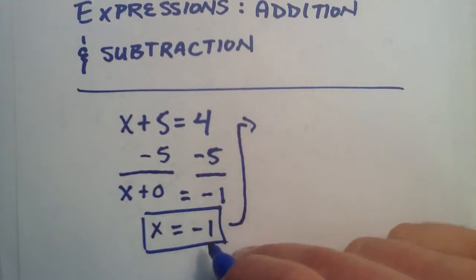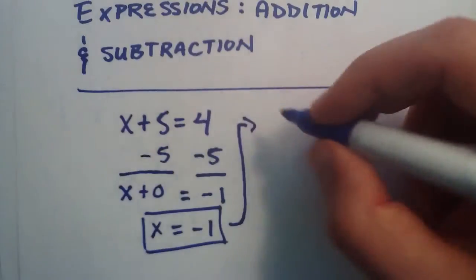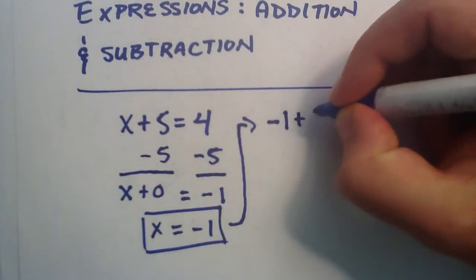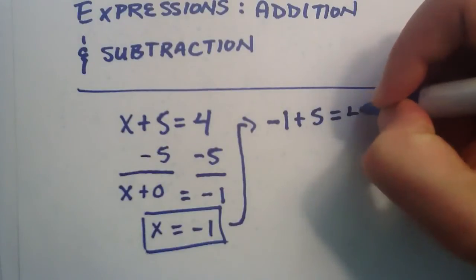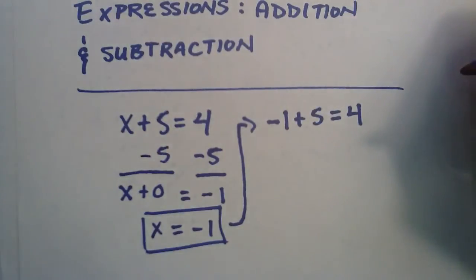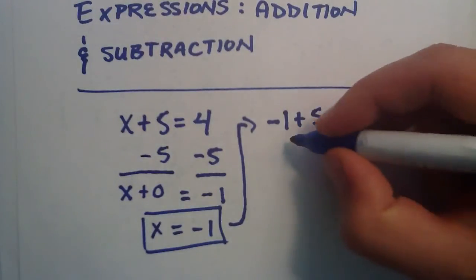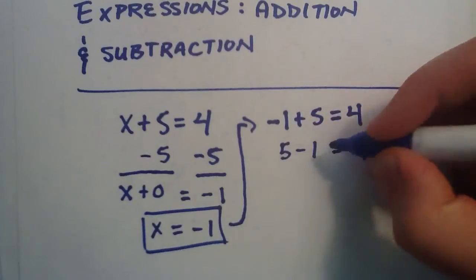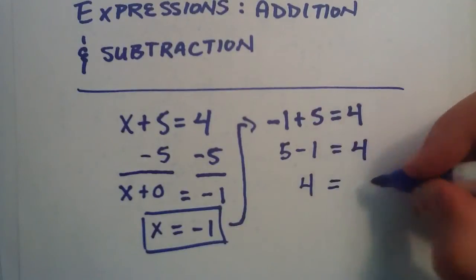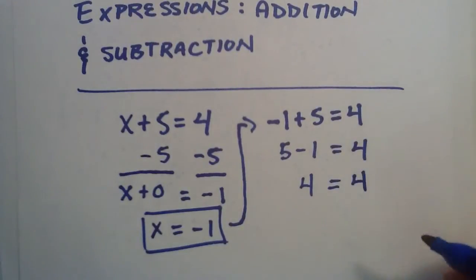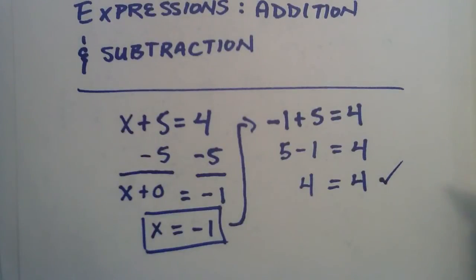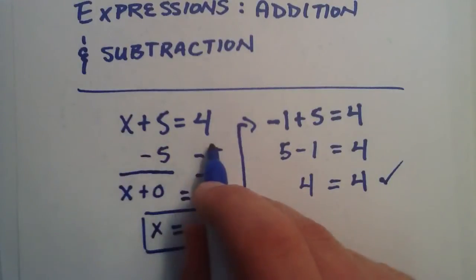So, we're going to put a negative 1 where the x was. So, instead of x plus 5, we do minus 1 plus 5. And that should equal 4. Now, because of the commutative property of addition, we can rewrite this as 5 minus 1 equals 4. And 5 minus 1 equals 4. And 4 is on the other side. So, now we just have an expression that says 4 equals 4. And that's true.